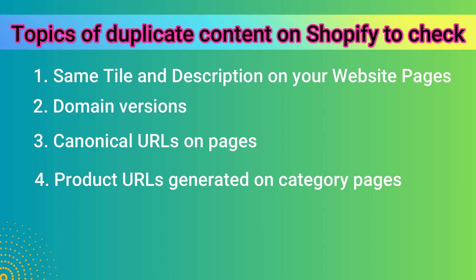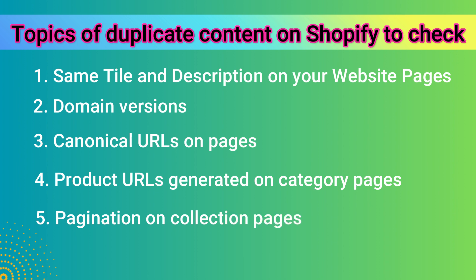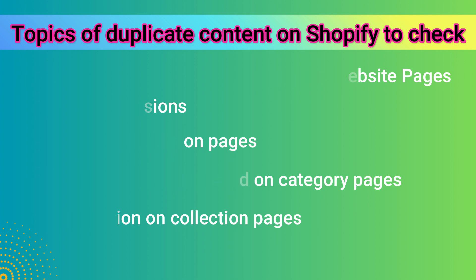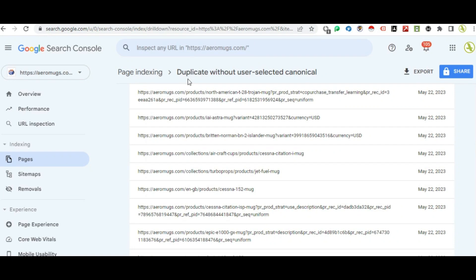Let's look at the duplicate content. Select the correct button to fix it. Follow the canonical tag correction — this is the first topic. Fix the website without a user-selected canonical tag, and address the domain version settings.